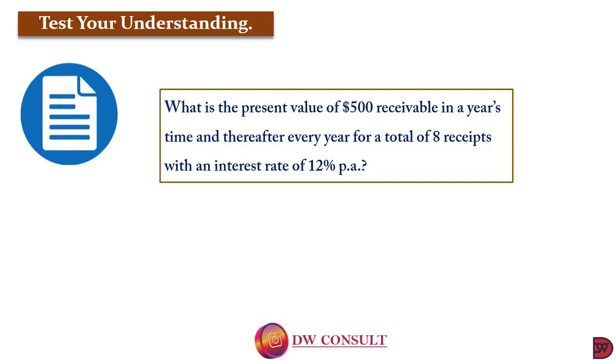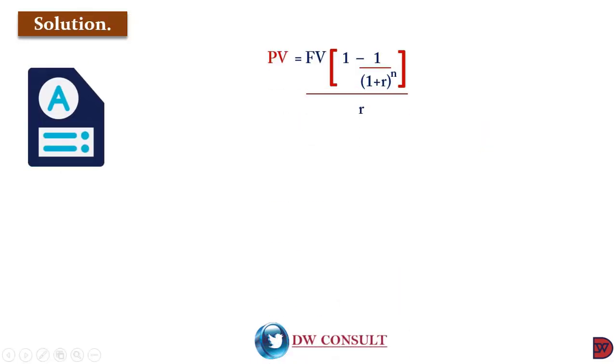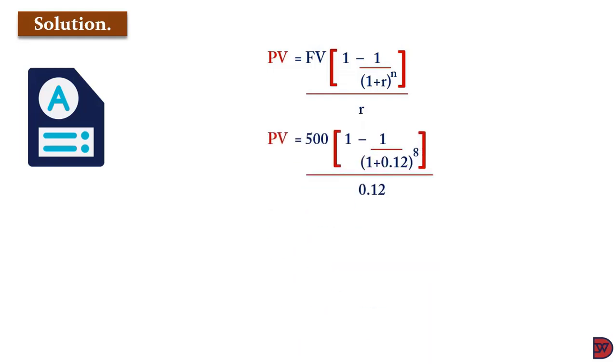So here they are supposed to receive $500 for 8 times starting after the first year. The formula is future value multiplied by [1 minus 1 divided by (1+r)^n] divided by r. So it will be $500, which is the amount to be received every year.